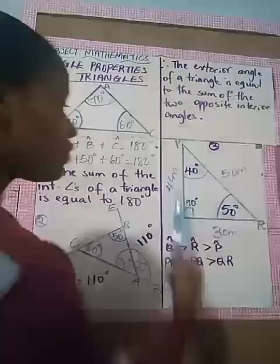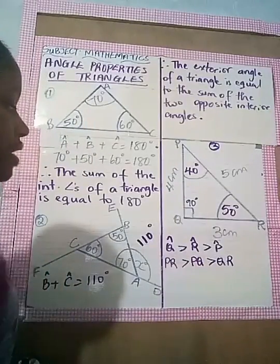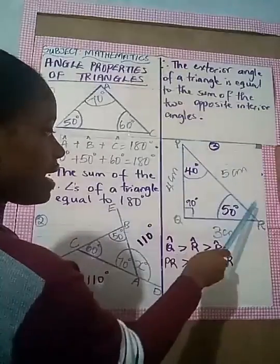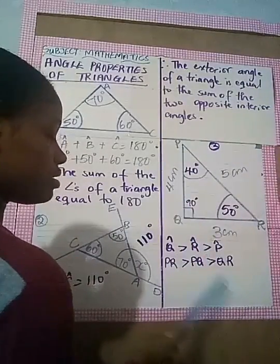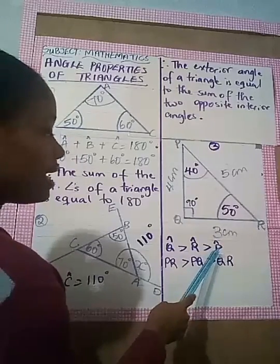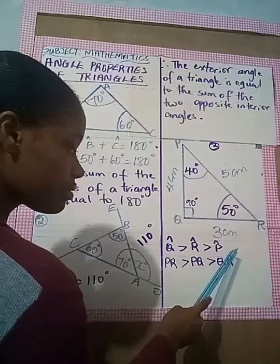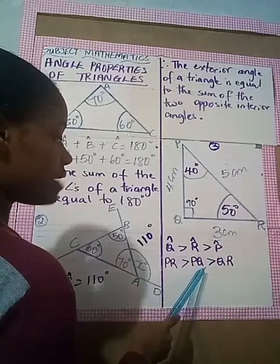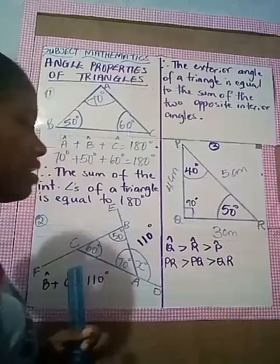And that goes for all three sides. If angle Q, which is opposite to side PR, is greater than angle R, which is opposite to side PQ, then angle R must be greater than angle P and side PQ must also be greater than QR.